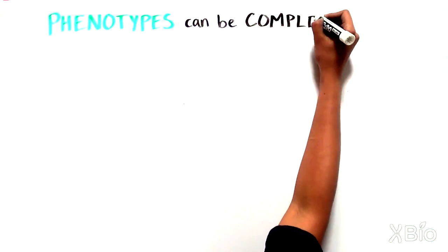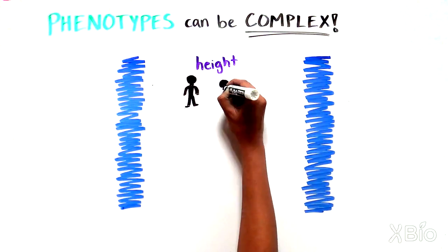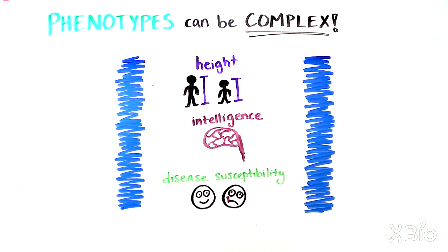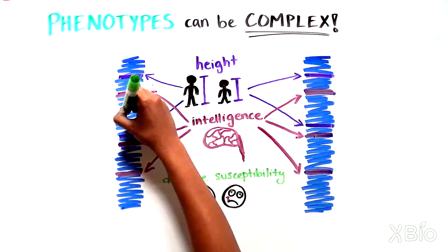Most phenotypes, however, are not as simply explained and understood as eye color. Height, intelligence, and susceptibility to different diseases, for example, are complex blends of numerous genes and their many alleles.